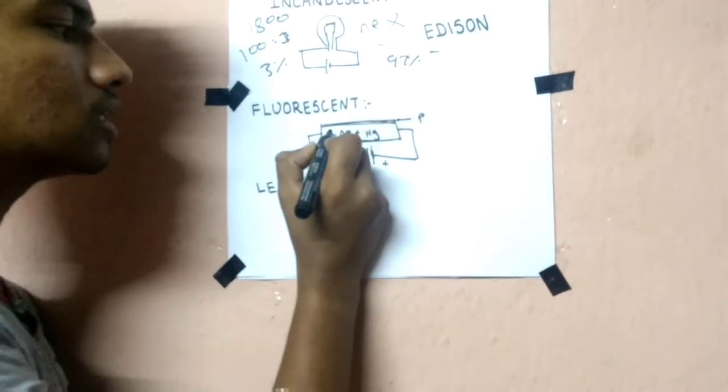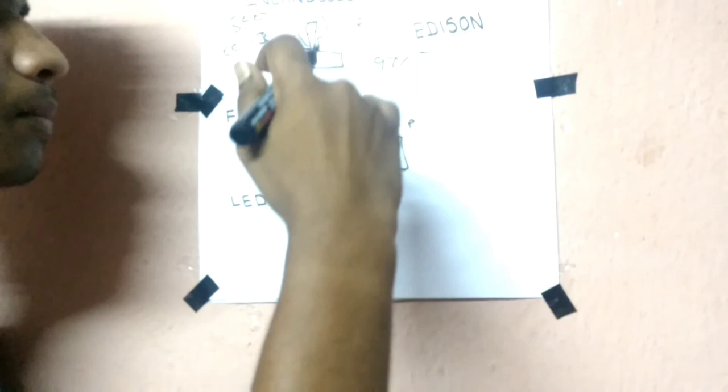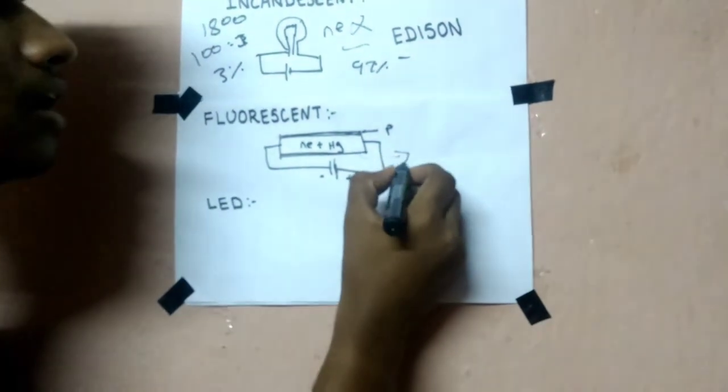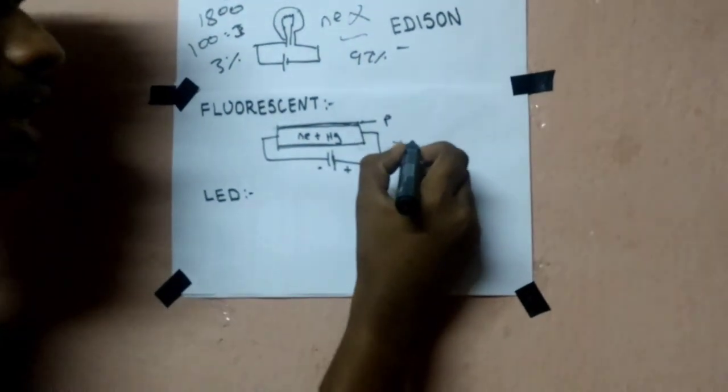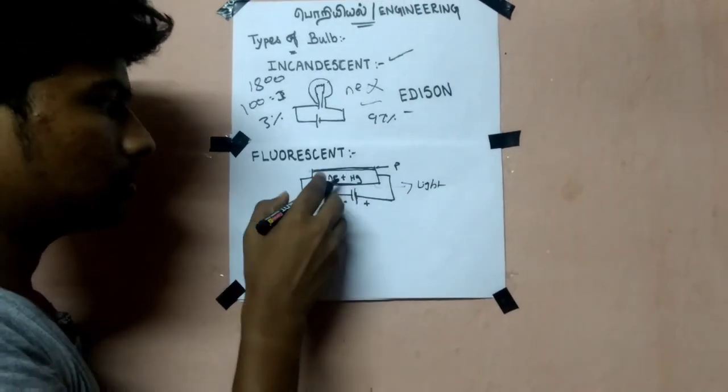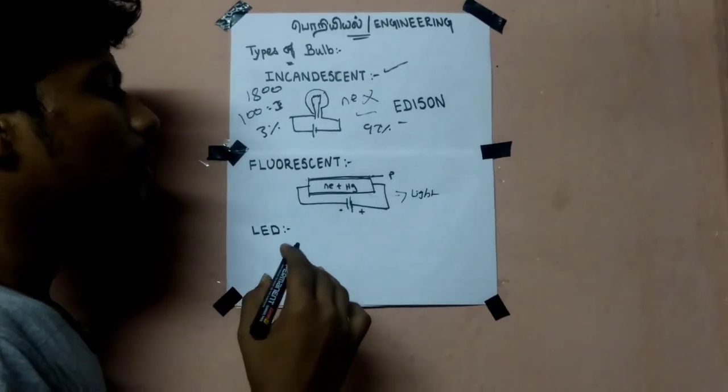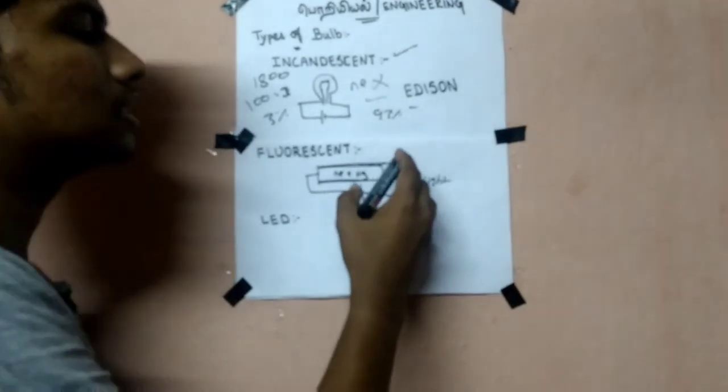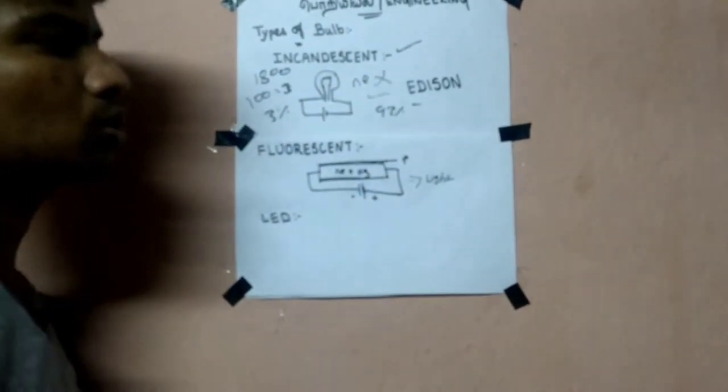This is the current power of the electrons. The neon plus mercury is in the tube, so we get light energy. This is the fluorescent working function.